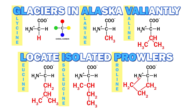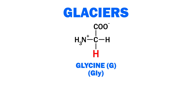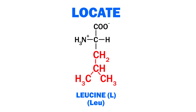And now for a brief review: glaciers — glycine; in Alaska — alanine; valiantly — valine; locate — leucine; isolated — isoleucine; prowlers — proline.